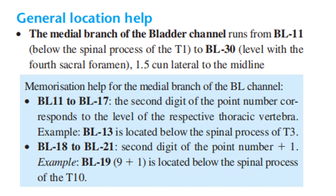The medial branch of the bladder channel runs from Bladder 11 below the spinous process of T1 to Bladder 30 at the level of the 4th sacral foramen, 1.5 cun lateral to the midline. Memorization help: for the medial branch, Bladder 11 to Bladder 17, the second digit of the point number corresponds to the level of the respective thoracic vertebra. For example, Bladder 13 is located below the spinous process of T3.